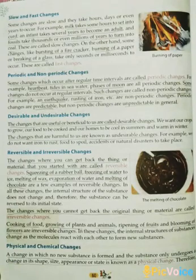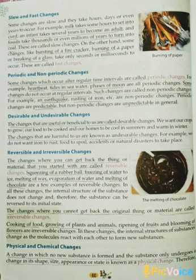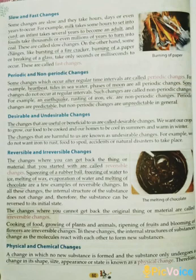Then, slow and fast changes. Some changes are slow and they take hours, days, or even years to occur. For example, milk takes some hours to set into curd, and an infant takes several years to become an adult. On the other hand, some changes like bursting of a firecracker, burning of a paper, or breaking of a glass take only seconds or milliseconds to occur. These are called fast changes.